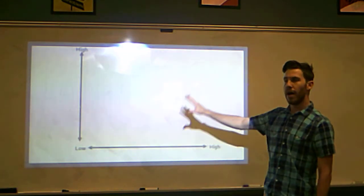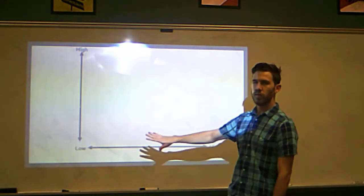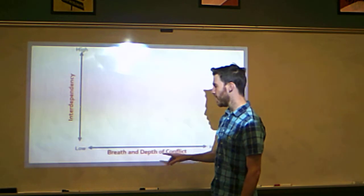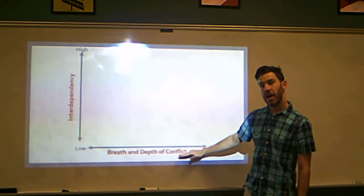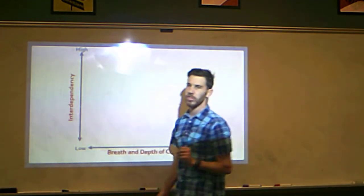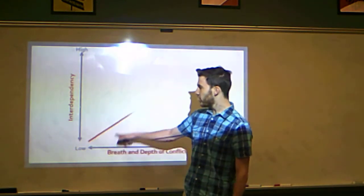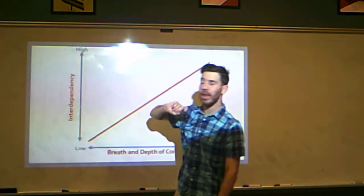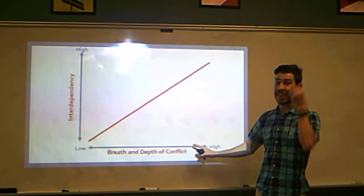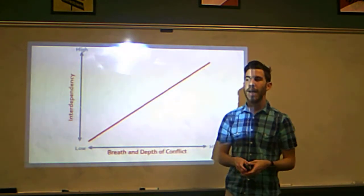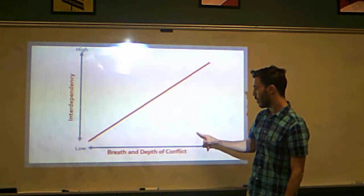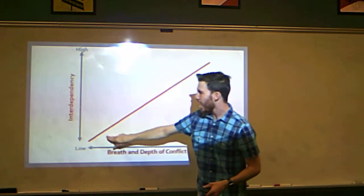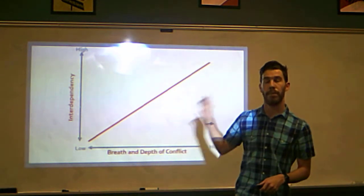There are different levels of conflict. I'm going to reference a graph with low and high axes. The first axis is interdependency, and the second is the depth and breadth of conflict — meaning what the conflict is about and how much you work with that person. If the conflict isn't much and you don't work a lot with that person, it's going to be nothing. But if you have a lot of interdependency and a very deep conflict, it's going to be very high. There are cases where there's high conflict but little interdependency. Using a scatterplot, most points show a positive correlation.